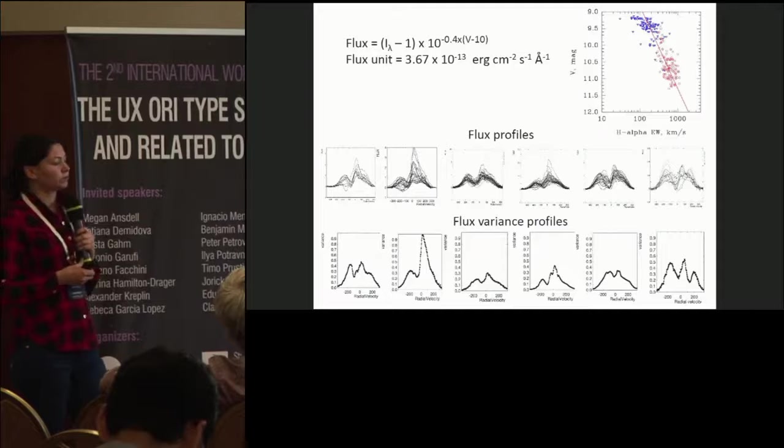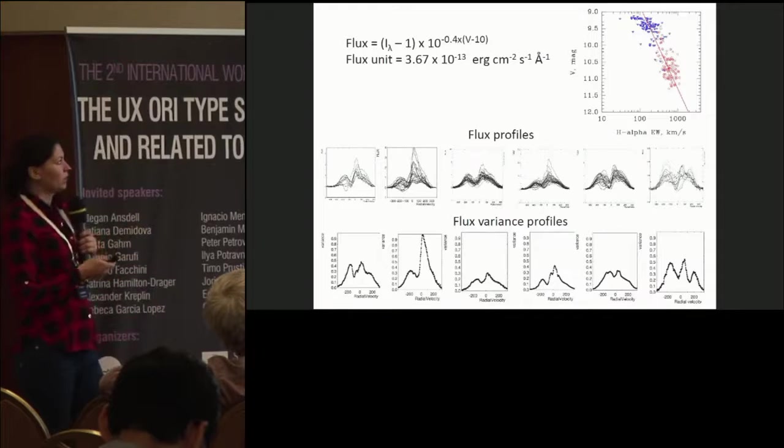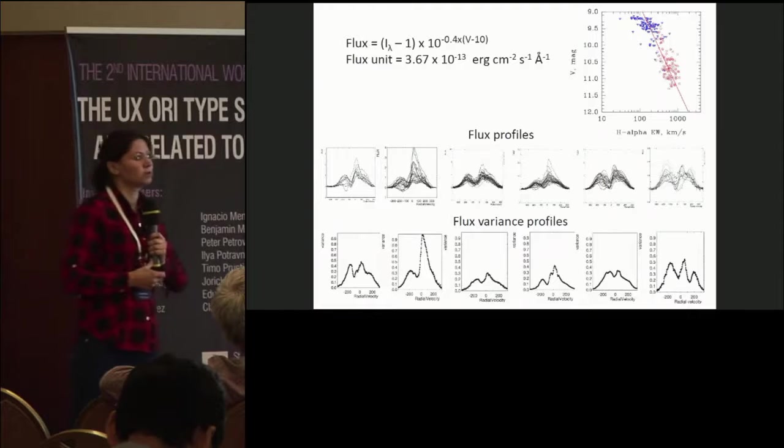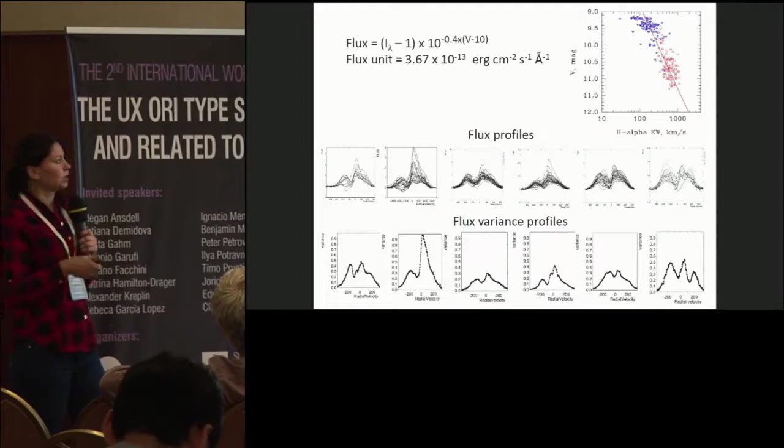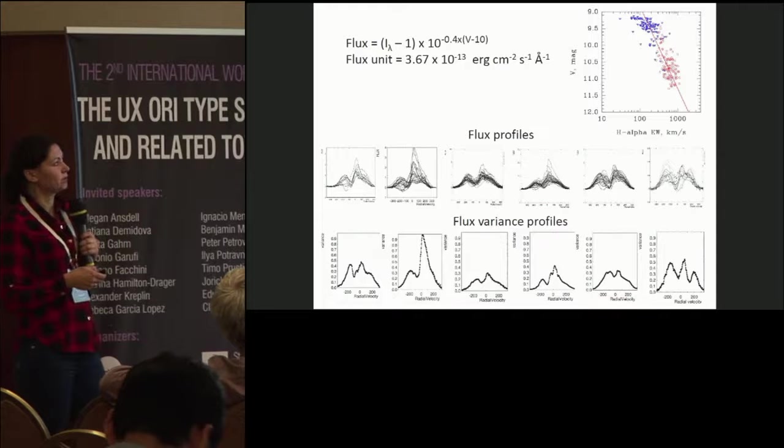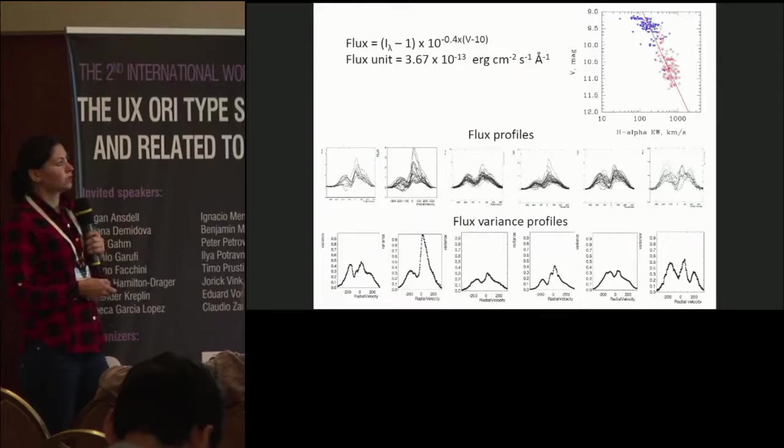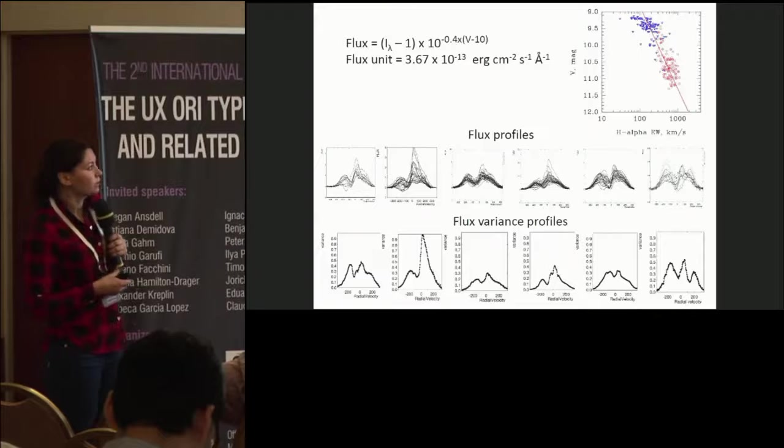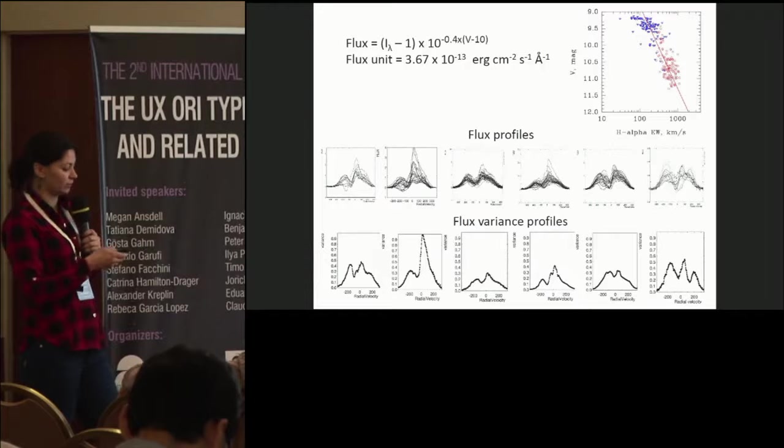To estimate how variable the star is, we calculated the flux of the line from intensities. And in case the star obscures by the dust, but H-alpha emitting line region not obscures by this dust, we will see a linear relationship between the brightness of the star and the equivalent width of H-alpha line. We see this relationship in this plot. And spreading around this line is just because of intrinsic variability of H-alpha line profiles.